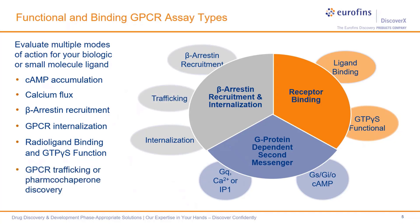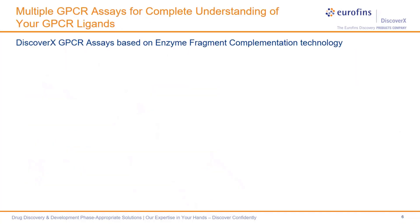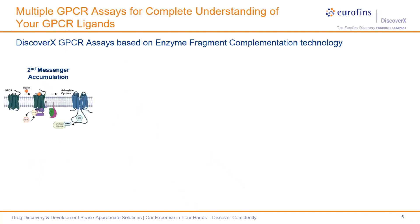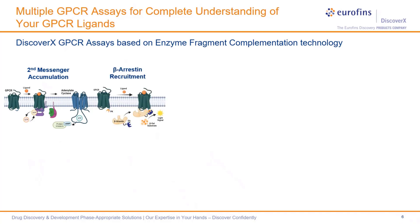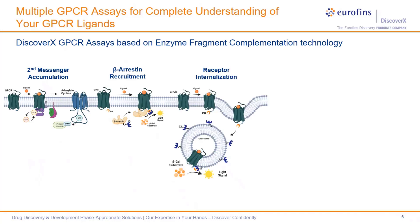Additionally, evaluate your GPCR's cellular trafficking patterns or discover novel pharmacochaperones that rescue your mutant or misfolded protein from a particular disease like cystic fibrosis. Altogether, note that one or more assay types may be necessary to thoroughly understand your GPCR and ligand's pharmacological activity. Here you see several assay principles for some of the GPCR assays, based on the simple enzyme fragment complementation technology that DiscoverX is known for.